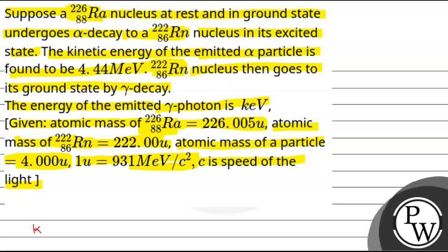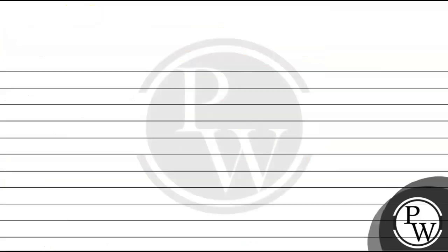Here we have a key concept: mass defect in nuclear decay. The reaction is radium-226 converts into radon-222 plus one alpha particle.